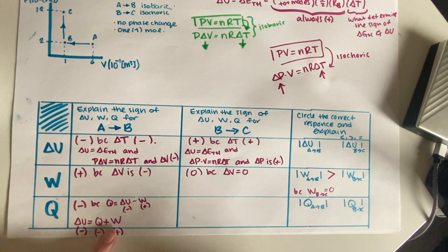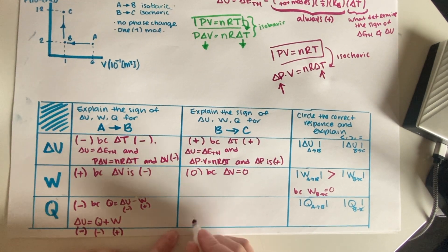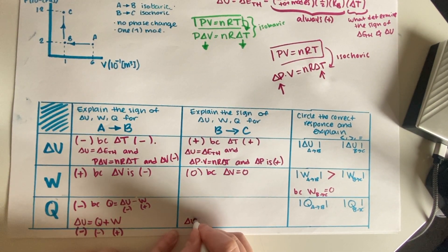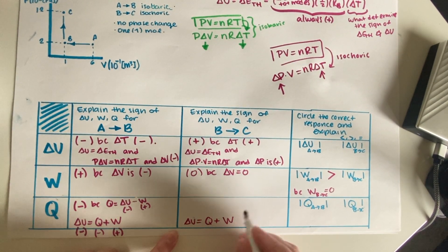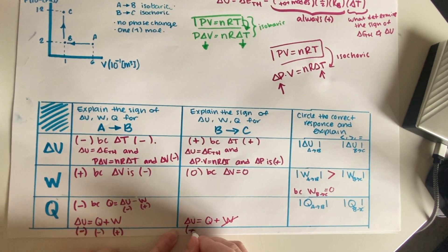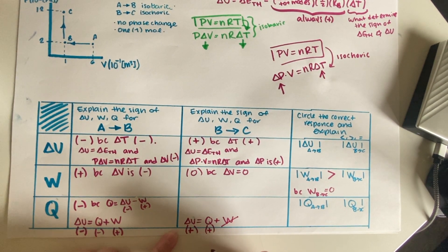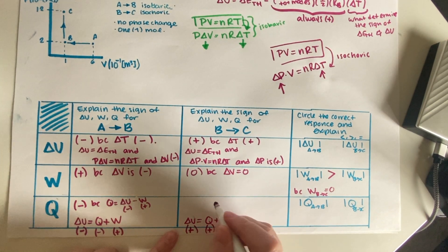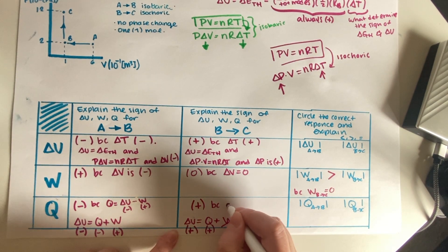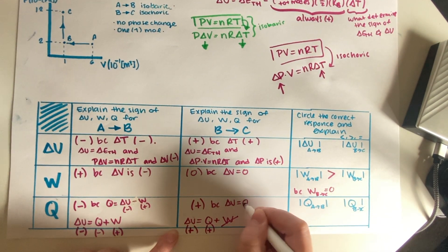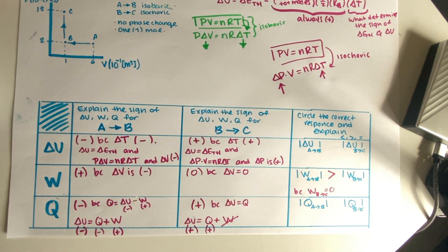For Q in process B to C, we use the same logic as before: delta U equals Q plus W. In this case W equals zero, and delta U is a positive number — therefore Q has to be a positive number as well.